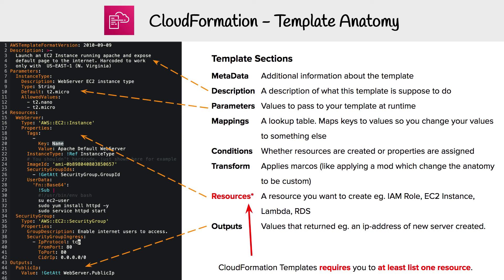Then you have outputs, which is just what you want to see as the end result. When I create the server, we don't know what the IP address is until it spins up, so I'm saying down here to get me the public IP address, and we can see that in the console without having to look at the EC2 console. The other advantage of outputs is that you can pass that information on to other CloudFormation templates, creating a chain of effects.